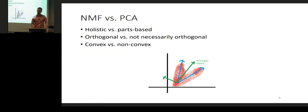A common choice for dimensionality reduction is PCA — Principal Component Analysis. PCA is an optimal approach under certain assumptions and produces a low-dimensional representation where each of the components are mutually orthogonal. NMF is an alternative approach which makes different assumptions about the data and produces a representation where the factors are not necessarily orthogonal. PCA yields a globally optimal solution to its optimization problem, whereas NMF's objective function is non-convex, so you can only hope for a locally optimal solution.